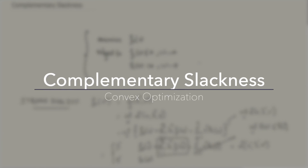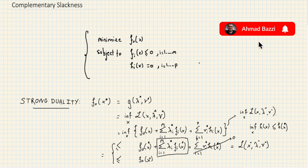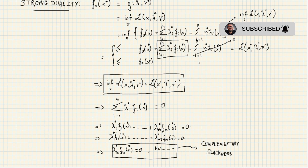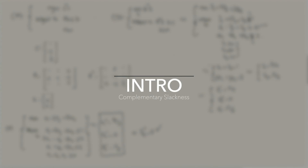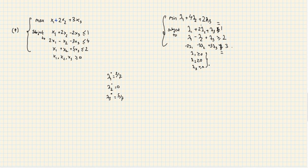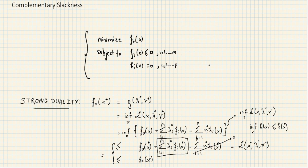In this lecture, we'll be talking about complementary slackness and its usefulness to test for strong duality, which means you can also test whether given points are optimal or not. We'll cover what the complementary slackness condition is and give two examples where a genie comes and gives us a point to test — one where the point is optimal, and one where it is not.